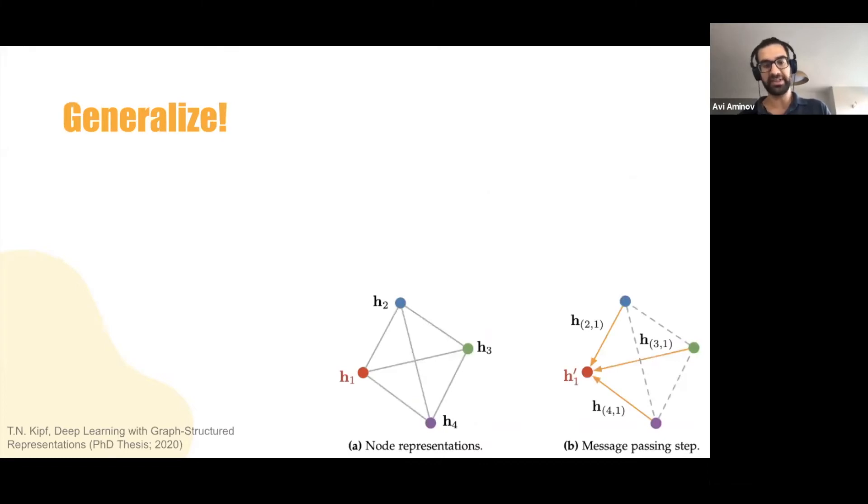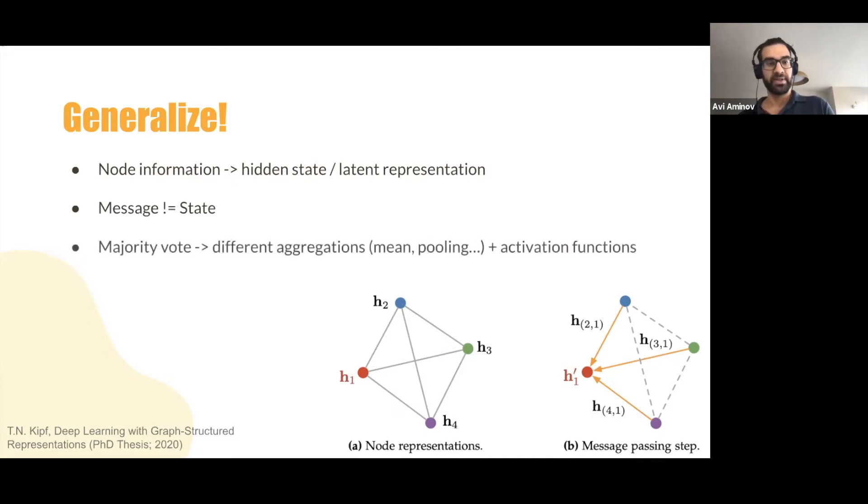So the next step we want to do, as I said, this is a very simple form, but it can also be generalized. And we want to see how we can generalize it. So for example, one form of generalization is starting to think of it as each node holds its hidden state. And here we're diverging into stuff that we know from deep learning. And each node has its hidden state. And the message it passes doesn't have to be its own state. It can be some sort of a function on its state and also a function on the incoming state. And also instead of majority vote, we can do different aggregations and activation functions. And we can select whatever function we want.